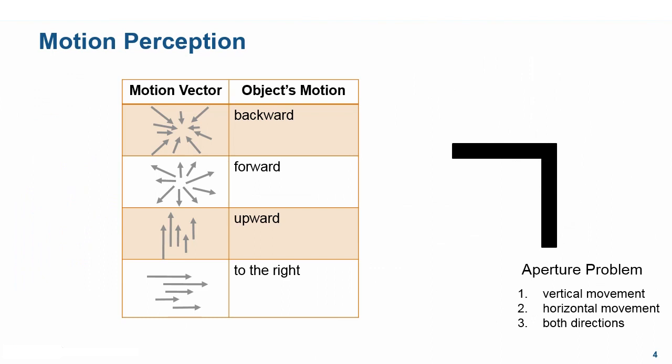Motion estimation methods return motion vectors, and it is important to interpret them correctly. Arrows going inwards mean the motion is backward. Arrows going outward means the motion is forward. Apart from this, arrows to the left, right, top, and bottom refer to likewise motions.